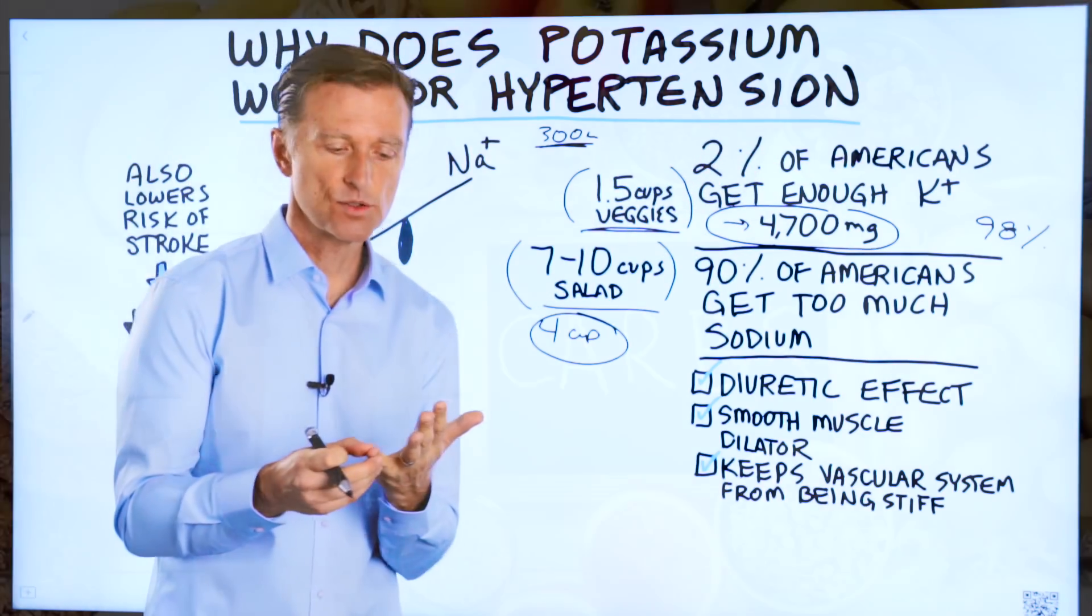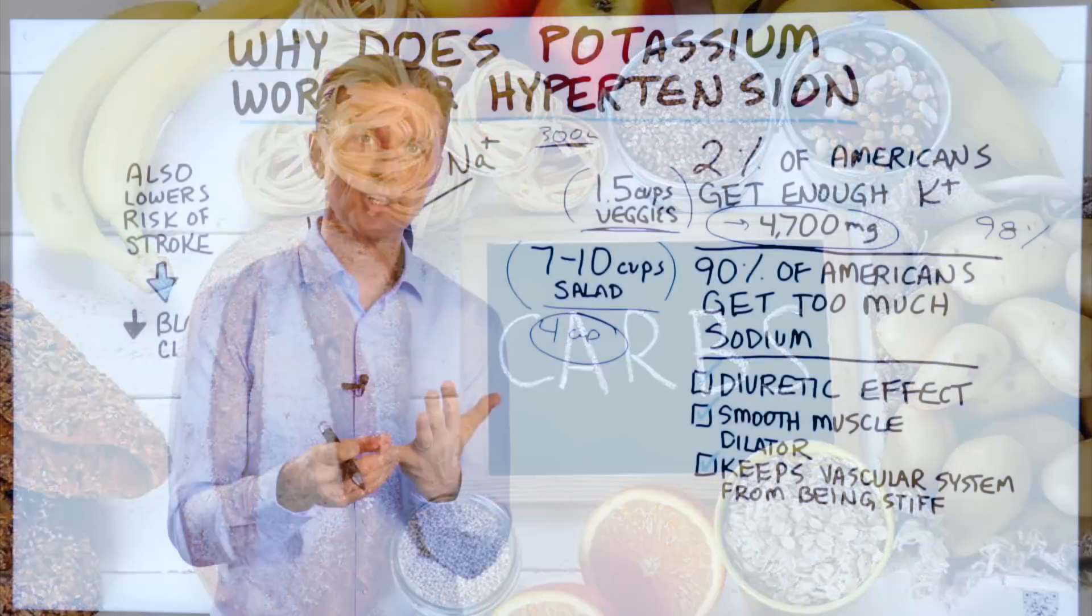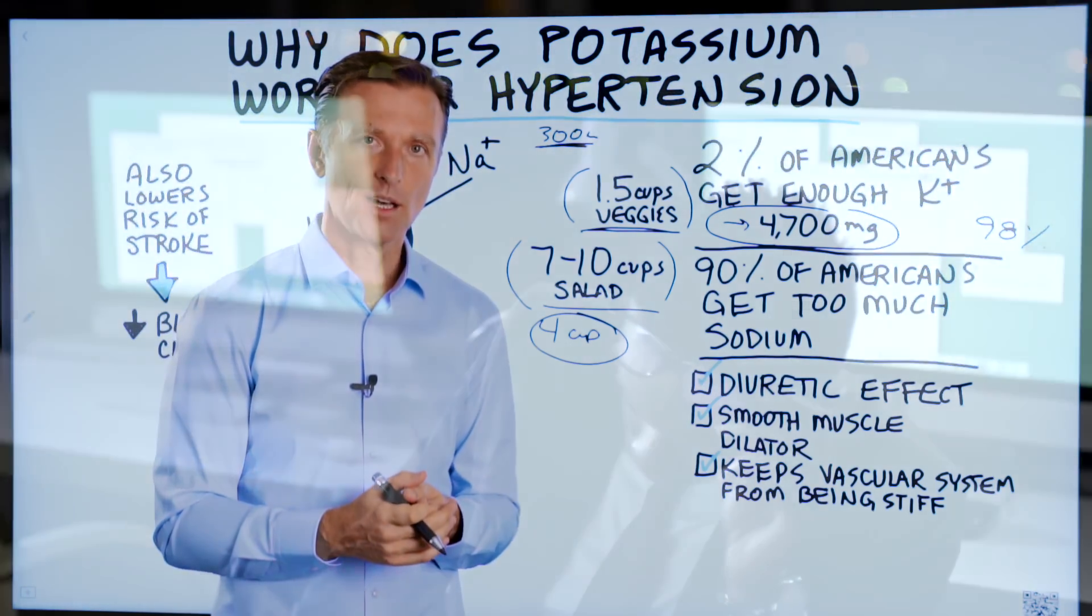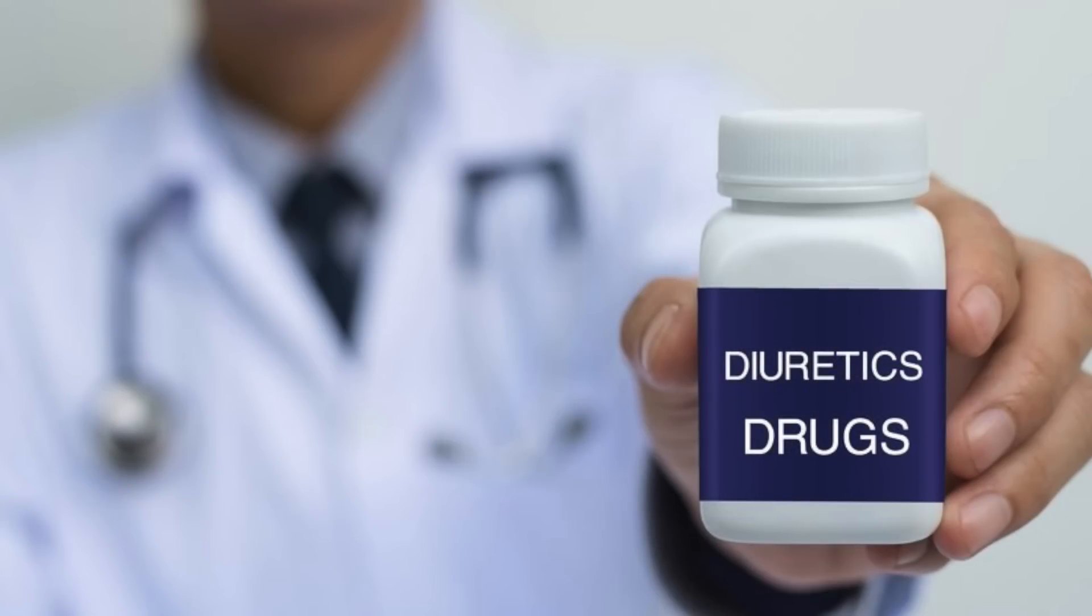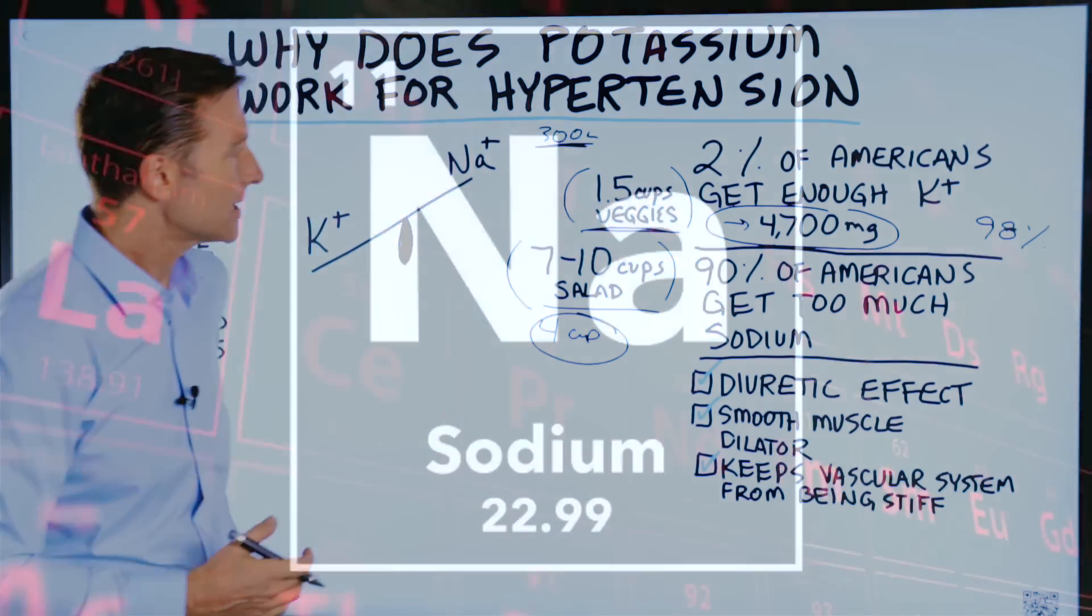Also, when you consume refined carbohydrates, both grain carbohydrates and sugars, you'll deplete your potassium even more. When you're under stress, you deplete your potassium. When you take a diuretic, you deplete your potassium. There's many different ways that people end up being deficient in potassium.